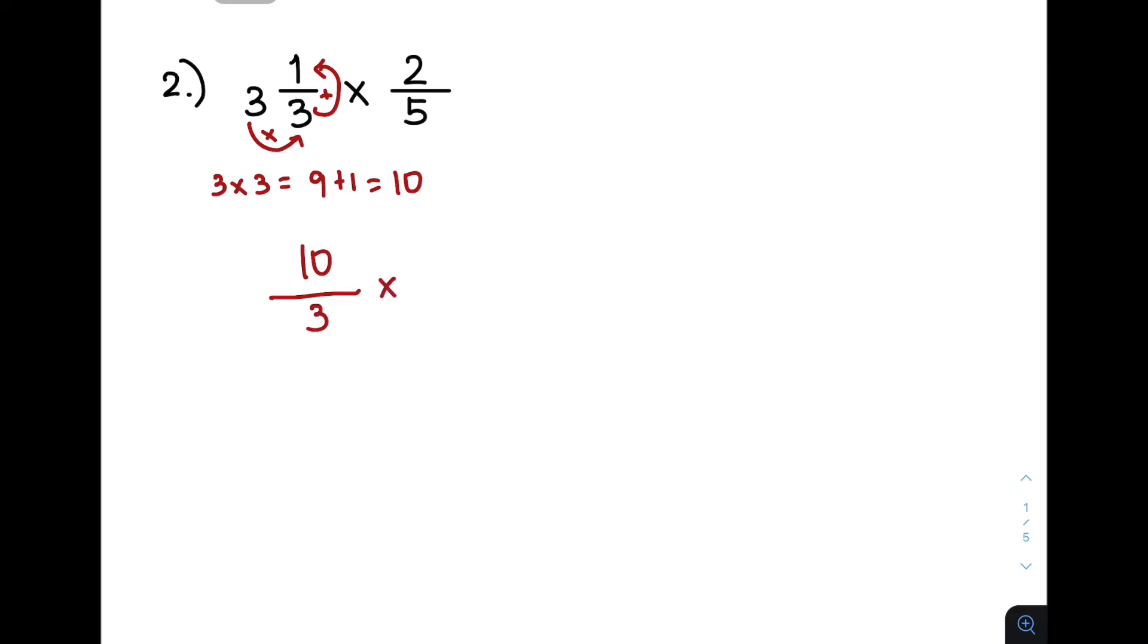So, that is times 2 over 5. Multiply your numerator. We have 20 over 3 times 5, which is 15. And to simplify our final answer, this can be simplified as 4 over 3. And, sige na nga, gawin na natin ito, mixed number, or 1 and 1 over 3. Ito yung mga possible answers natin, guys, for this.